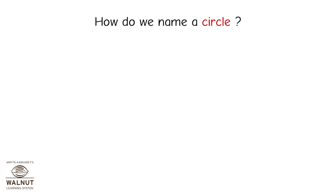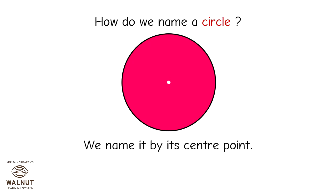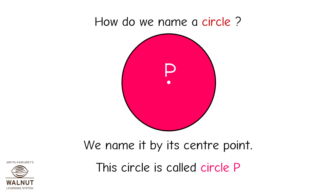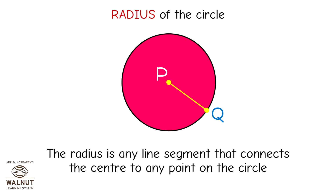How do we name a circle? This is a circle. How do you know that it is a circle? It is round and it has no end points. We name a circle by its center point. This circle is called circle B.